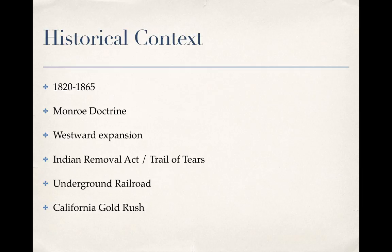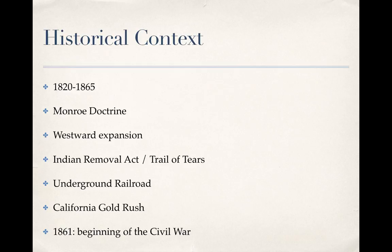The California Gold Rush was another big thing going on. With the movement out west, a lot of people thought there was wealth to be had, particularly in California, so that was a big draw. And just so you have this date: 1861 was the beginning of the Civil War, which lasted four years, ending in 1865.